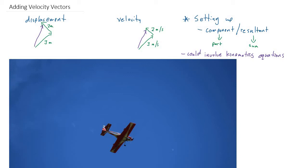For example, if we solve for components of a velocity and find the resultant velocity, we might be asked to use that velocity to calculate a distance. In general, we'll mostly be dealing with velocity, displacement, and time—not so much with acceleration on these problems.